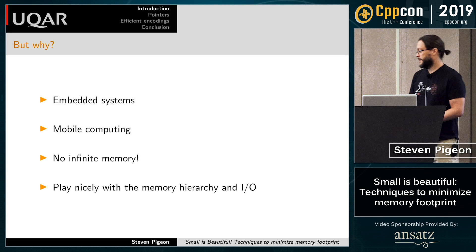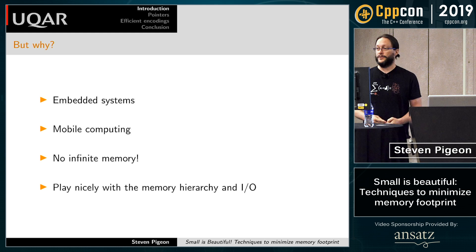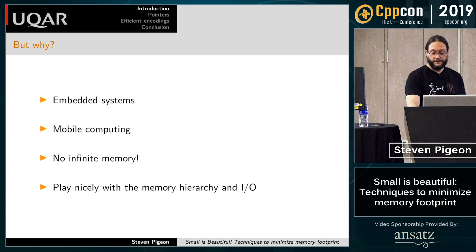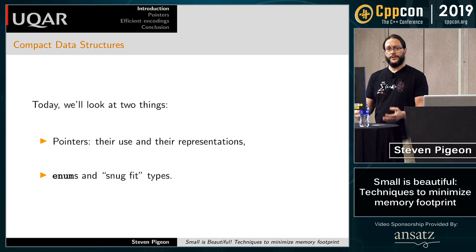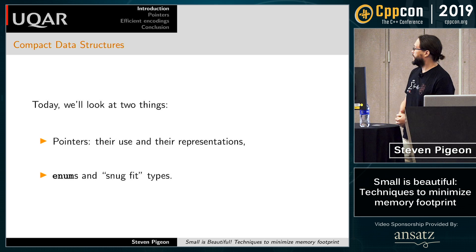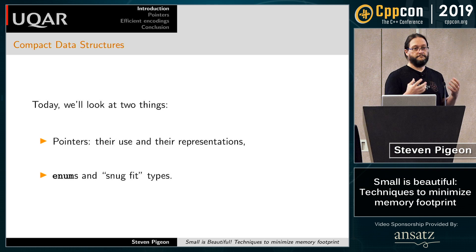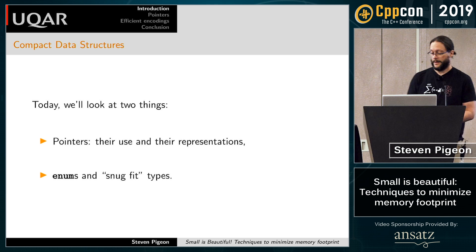Benjamin just showed us that we can use new attributes to ensure zero-size classes have zero memory. Today I'm going to concentrate on two things: pointers — what can we do with pointers and how we can choose a different representation so they're more efficient — and what I call a snug fit: how do I choose the smallest type that contains the value I want without breaking anything?